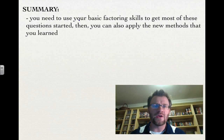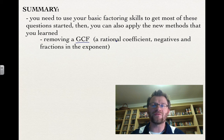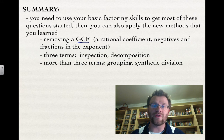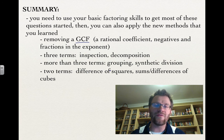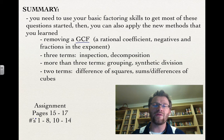In summary, use your basic factoring skills to get most questions started, then apply the new methods learned today. To remove a GCF, remember you might have a rational coefficient — a fraction in front — and you could have negative or fractional exponents. For three terms, try inspection or decomposition. For more than three terms, try grouping or synthetic division. For two terms, try difference of squares or sum or difference of cubes. Your assignment is on pages 15 to 17, questions 1 to 8 and 10 to 14 — just try a couple from each number. Good luck, and we'll see you in class.